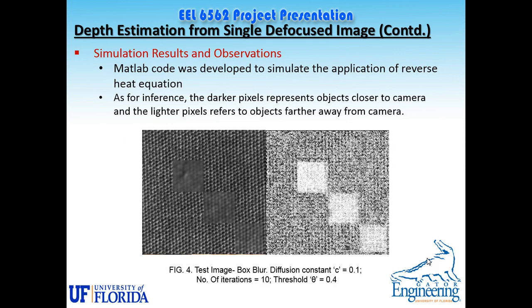This slide covers simulation results and observations. The code was developed in MATLAB to see the effect of the reverse heat equation. The darker pixels represent objects closer to the camera and lighter pixels represent objects further away. In the left image we have a pattern with three box blurs applied intentionally, then we applied the reverse equation along with the Perona-Malik scheme. The blurred parts are converted to white pixels and the non-blurred parts to dark pixels, which is correct. Our algorithm works for this ideal scenario.